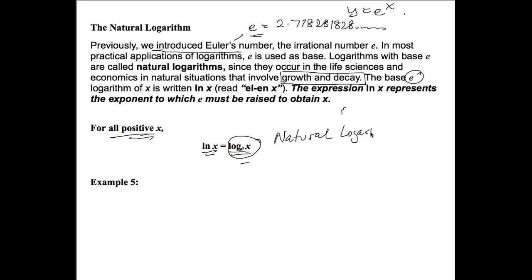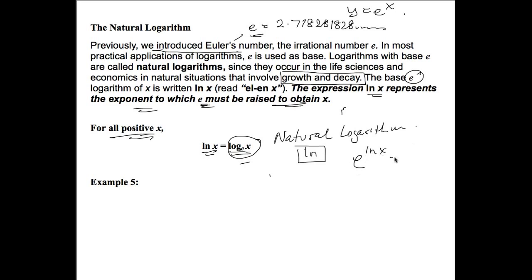You'll see the ln button on your calculator. Basically, ln of x represents the exponent to which e must be raised to obtain x. Just like normal logarithms, if I took e to the ln of x this would be x, and ln of e to the x would also be x, because these are inverse processes.